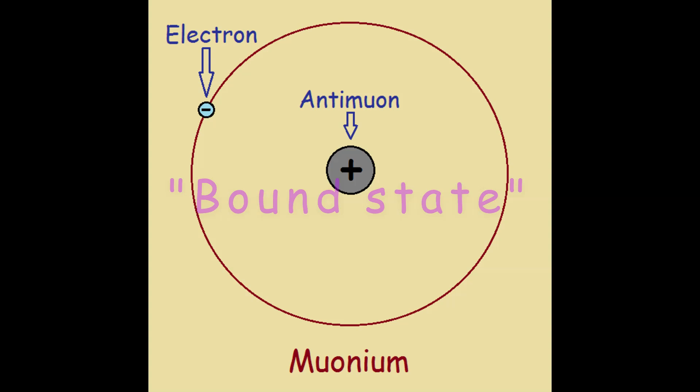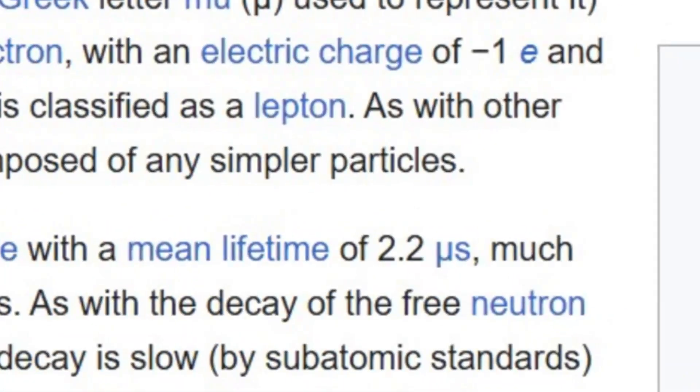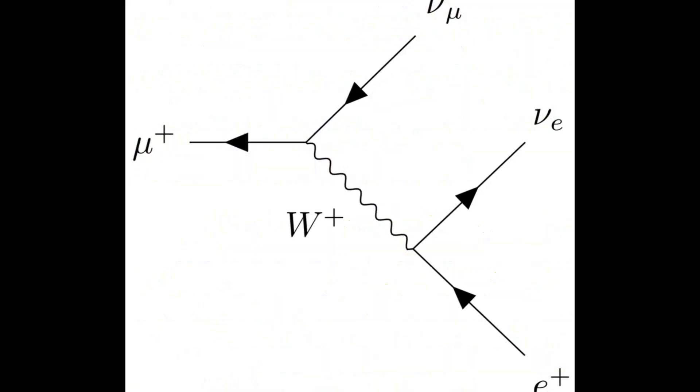It is known by the name muonium. It is a reasonably stable bound state, but unfortunately the muons decay in about 2 microseconds into a positron and 2 neutrinos.